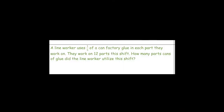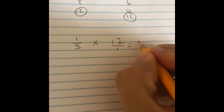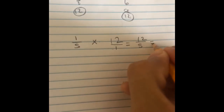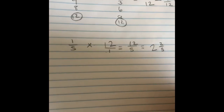A line worker uses one-fifth of a can of factory glue on each part they work on. They work on 12 parts in a shift. How many cans of glue does the line worker use in that shift? When you're doing something repetitively — over and over again — you can multiply the fraction by however many times you do it. So here: one-fifth times 12. Go ahead and compare yours with mine. Check your work, because you're going to have a quiz, and it's a good time to see if you're doing these correctly.